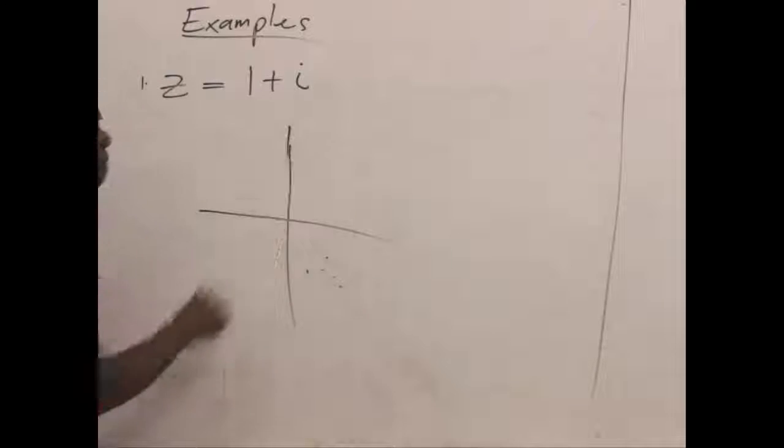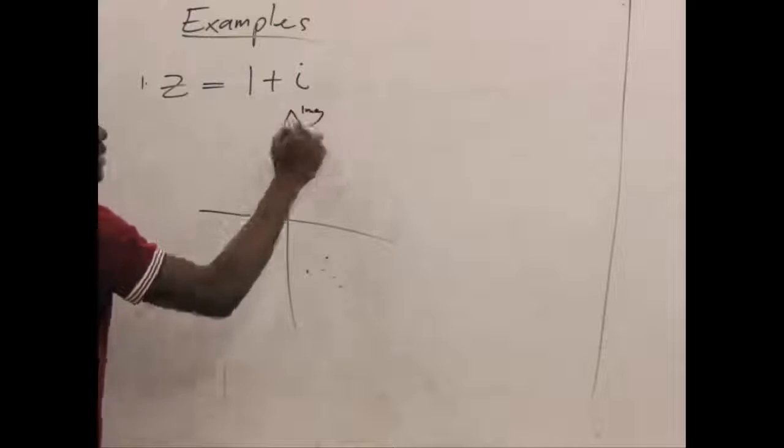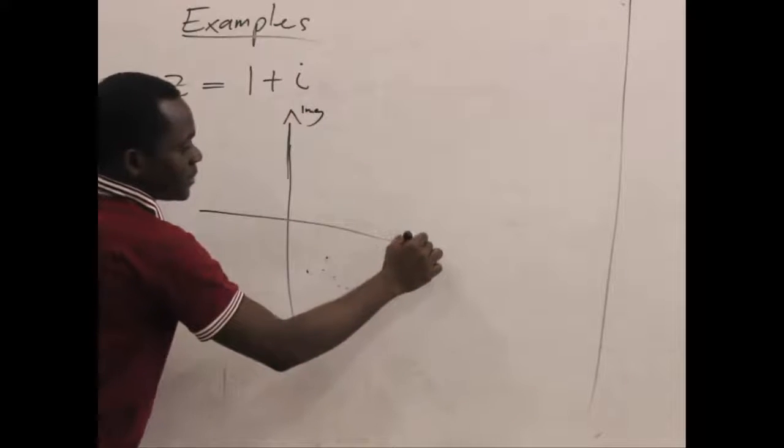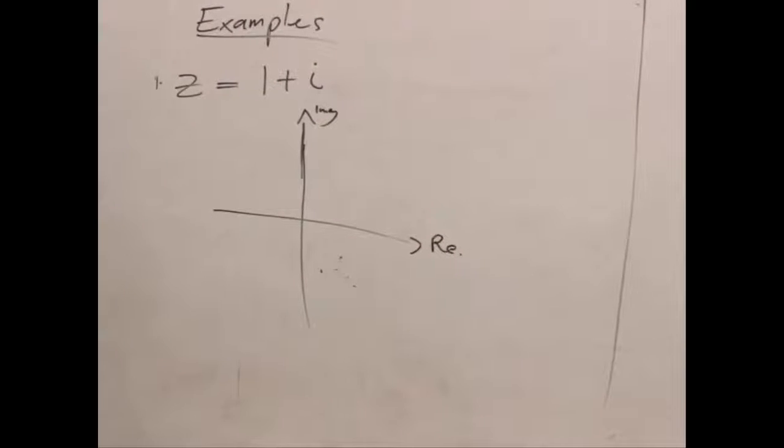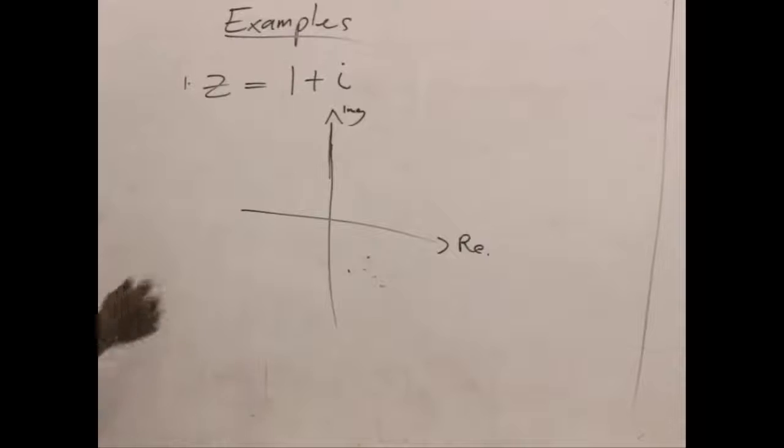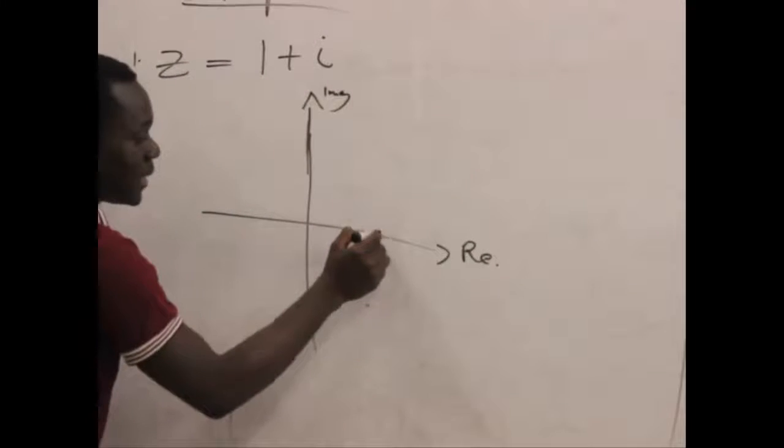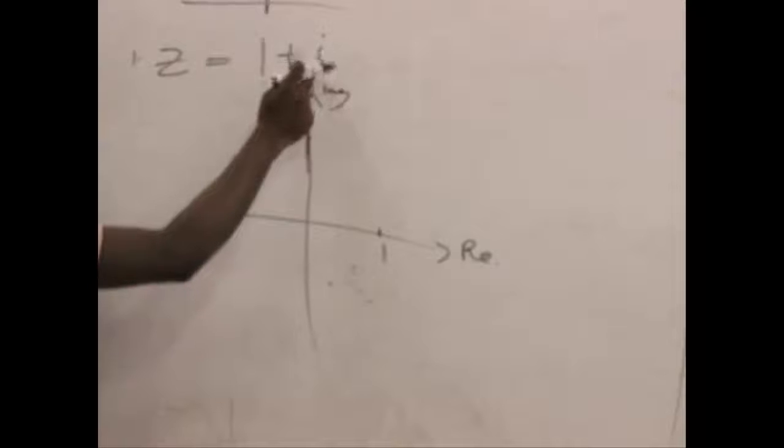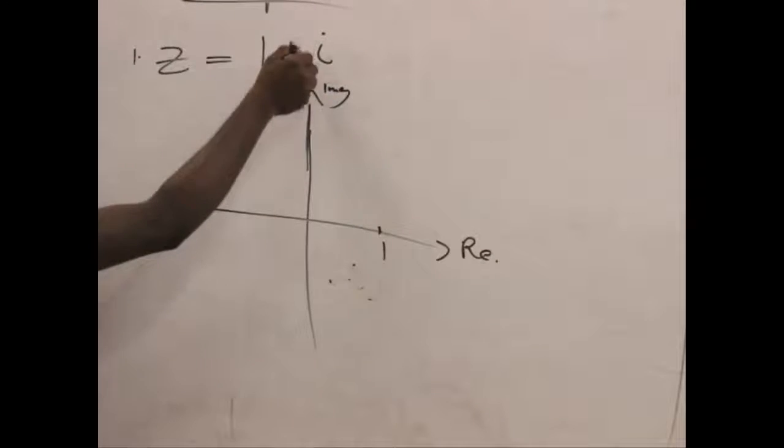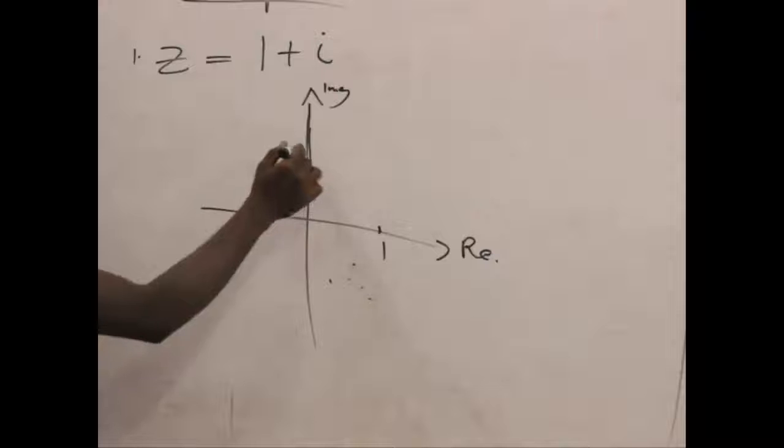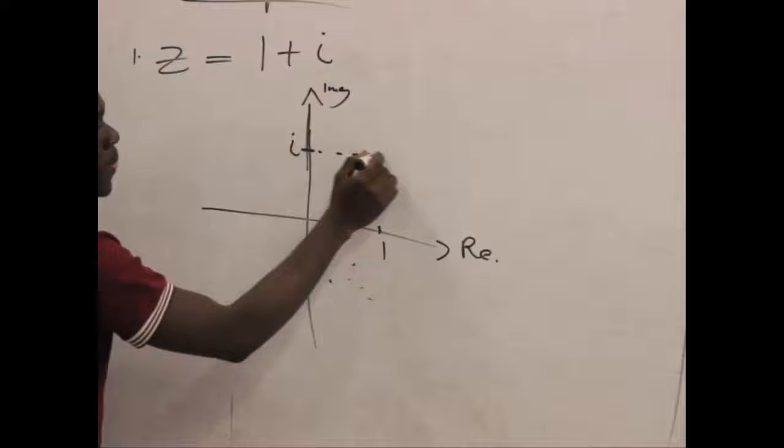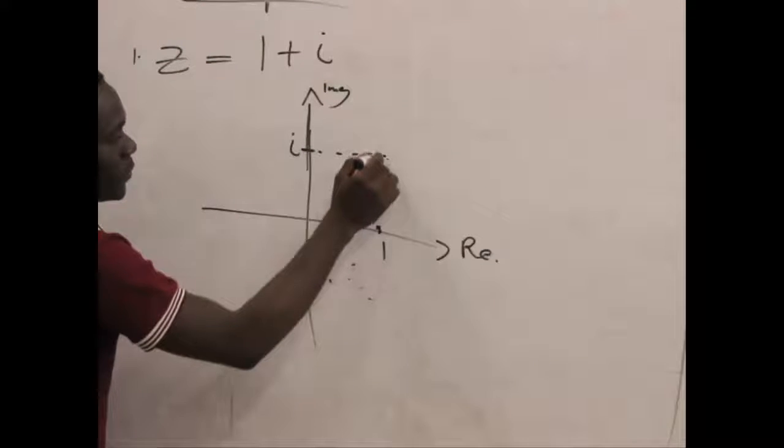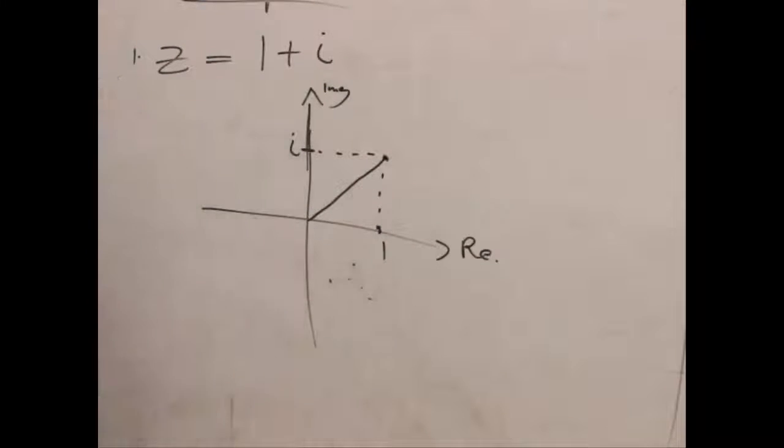We draw the complex plane with our imaginary axis and with our real axis, and we try to plot the complex number on the complex plane. So we have 1 here, so we mark our 1 on the real axis. And we have i which is 1i, so 1i should be on the imaginary plane. We can say we have our complex number z here.